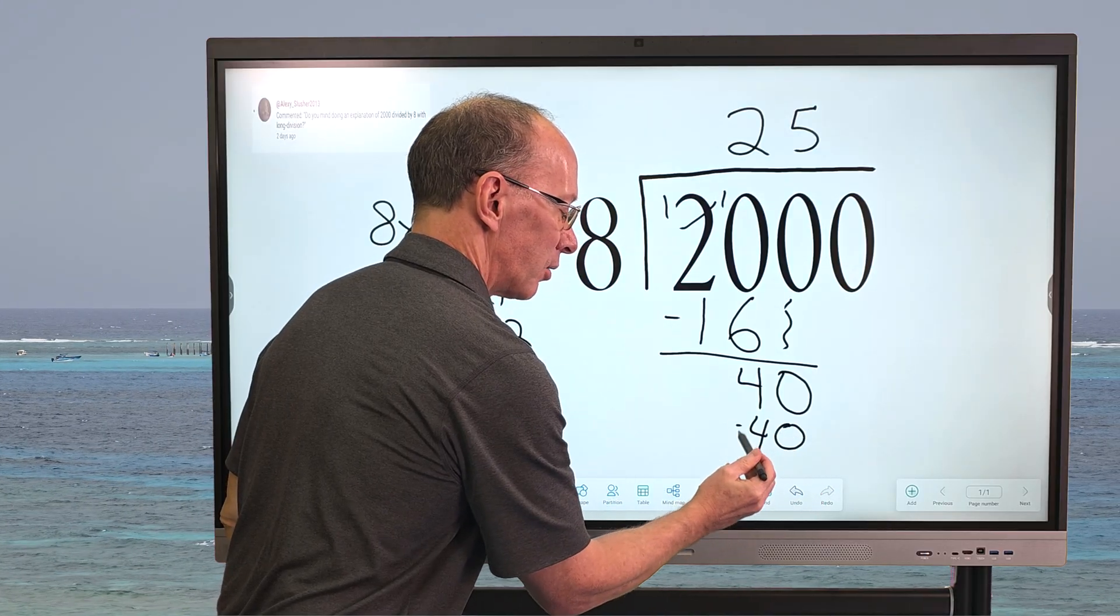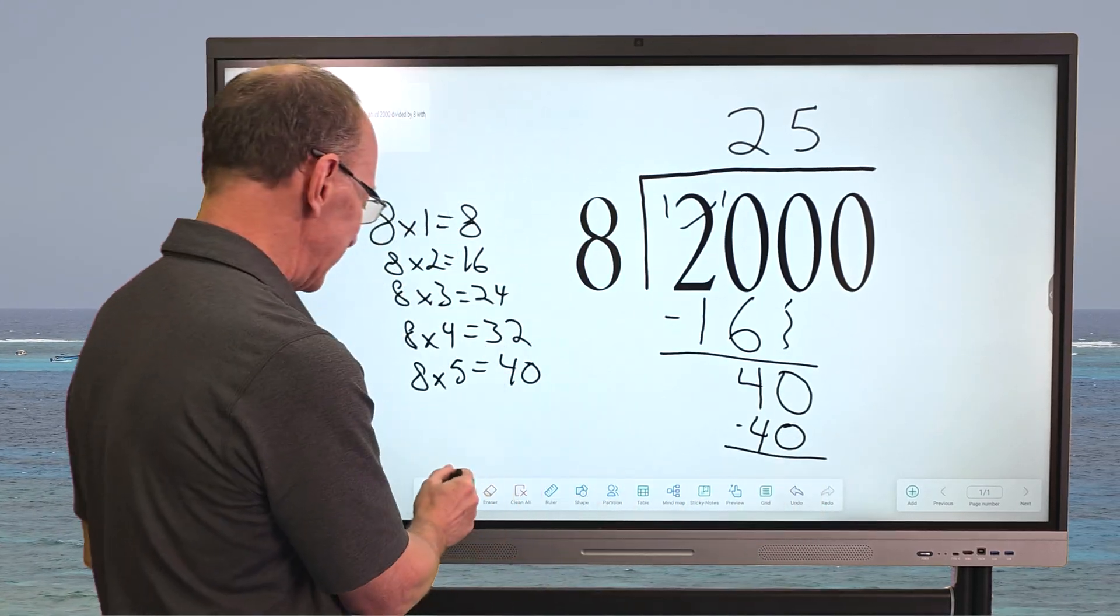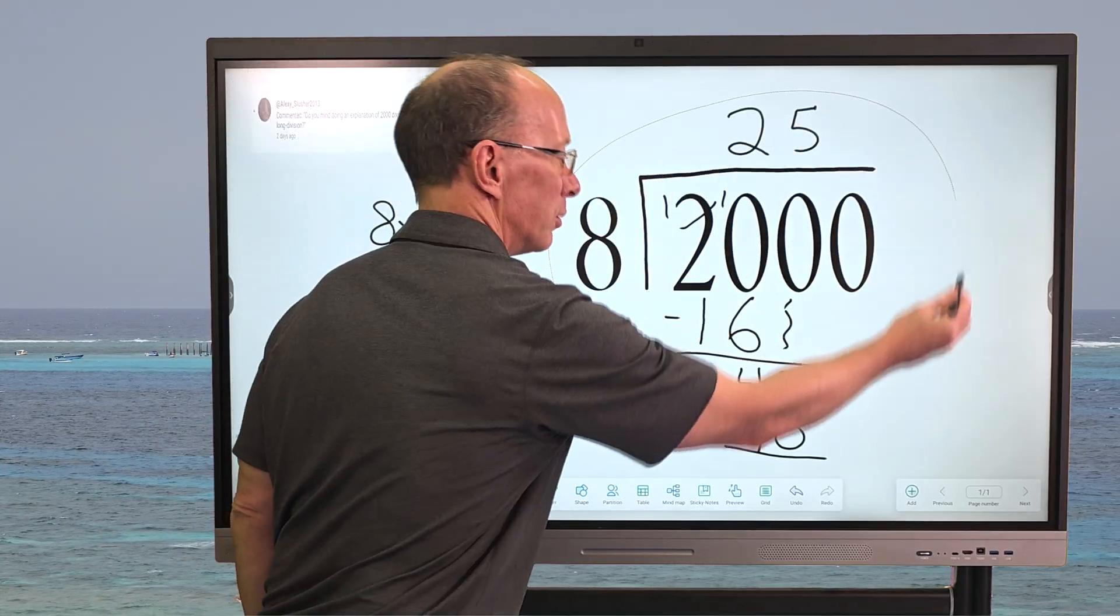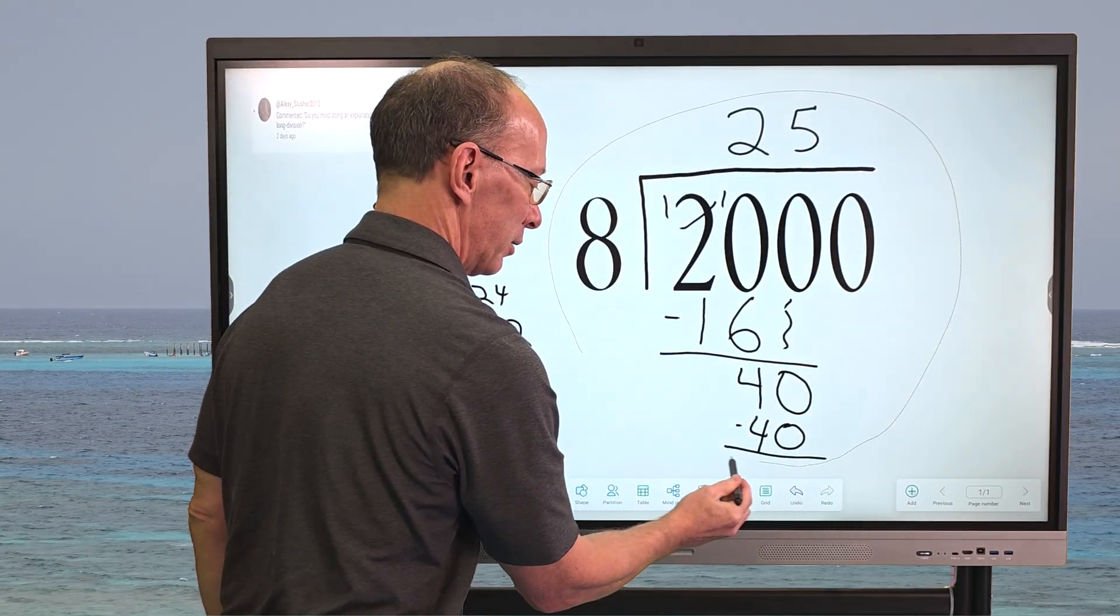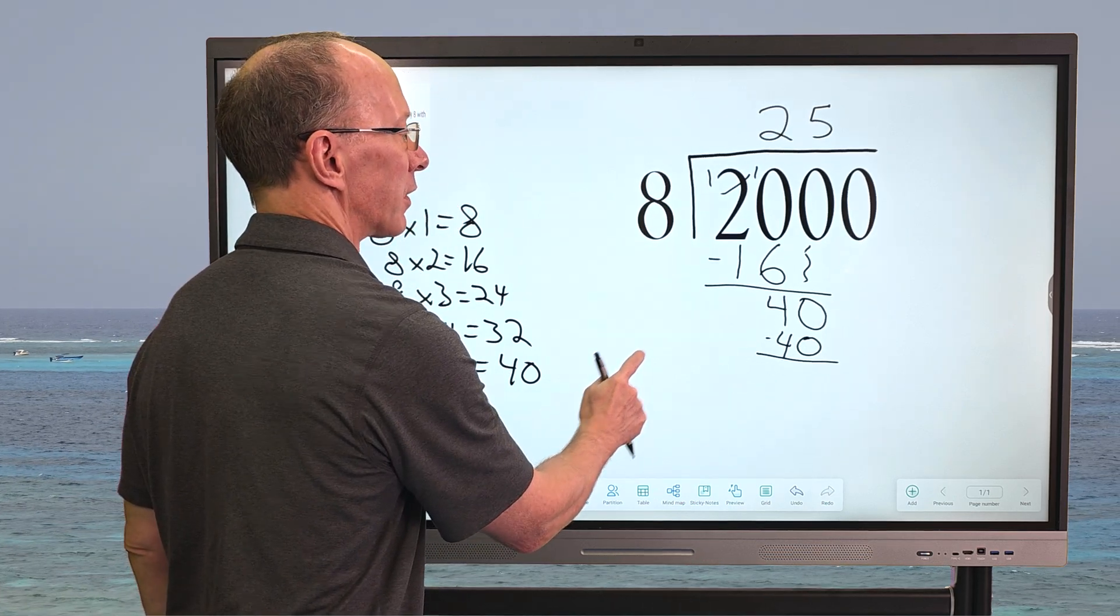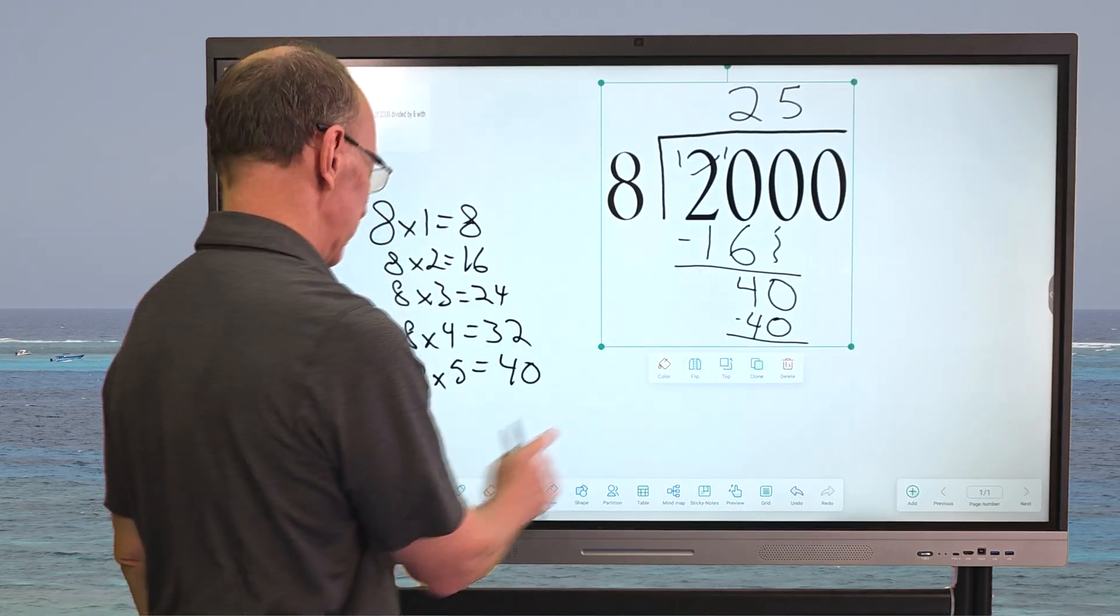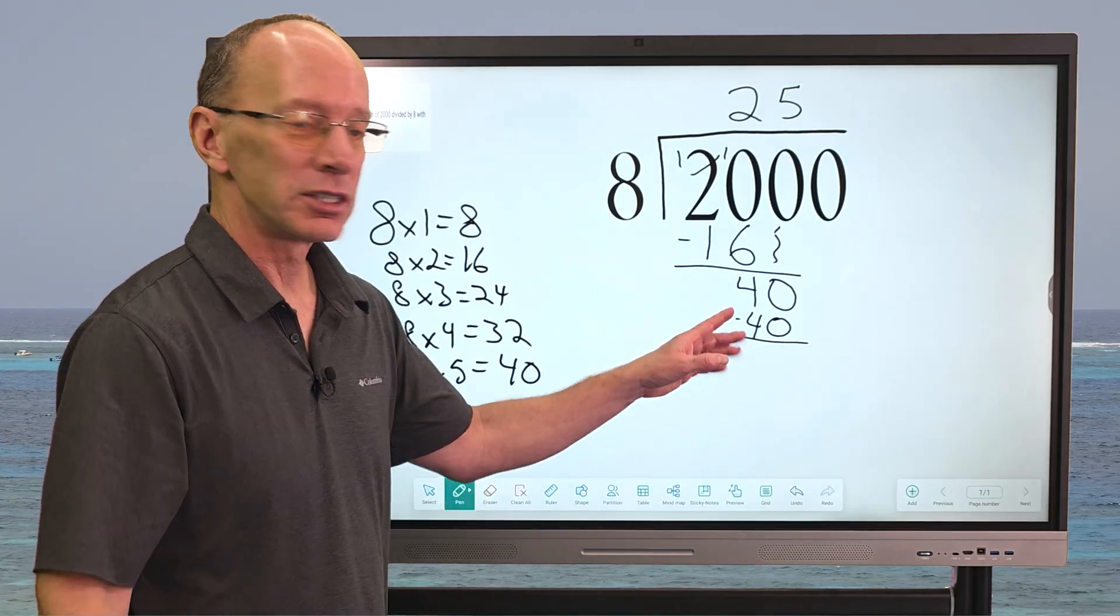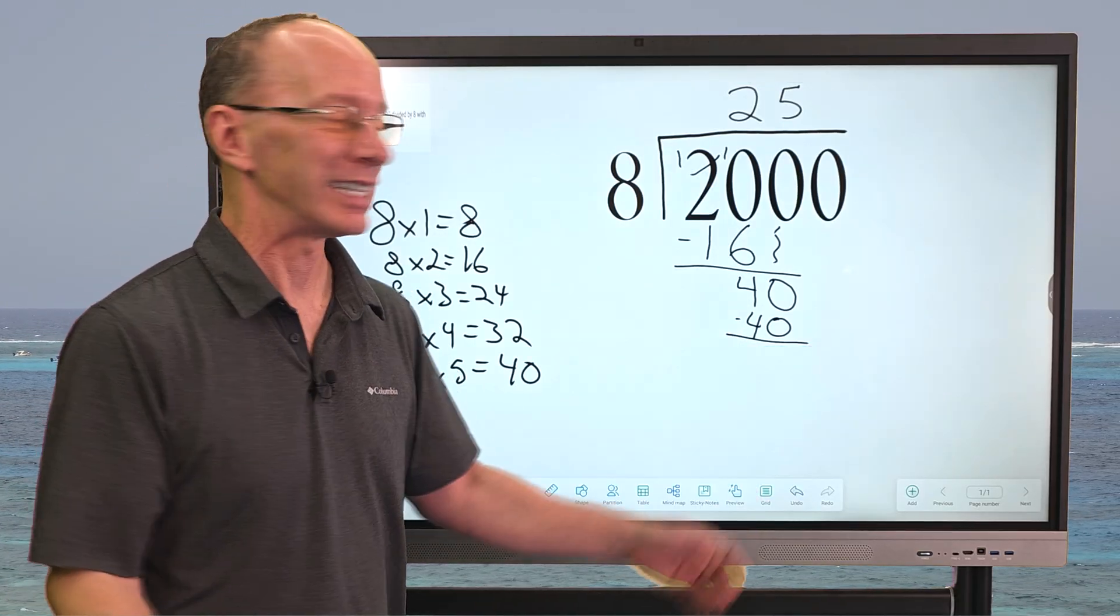And then I'm going to go ahead and subtract. I really need to make this problem smaller so we have more room to work. So let me go ahead and make that smaller. Nice thing about working on the whiteboard here. Move this over here. And then we can begin. All right, so 40 minus 40 equals zero.